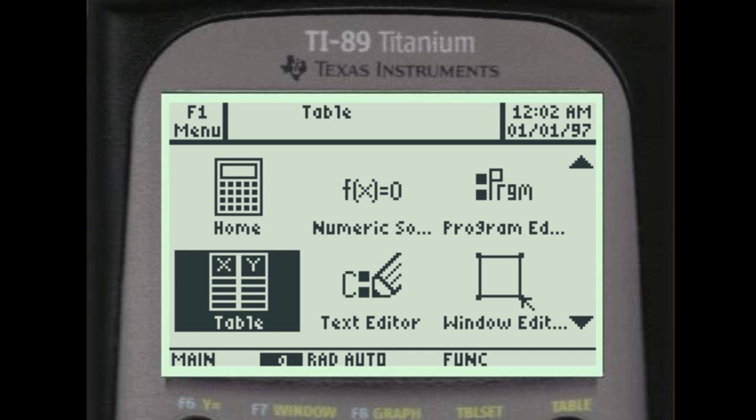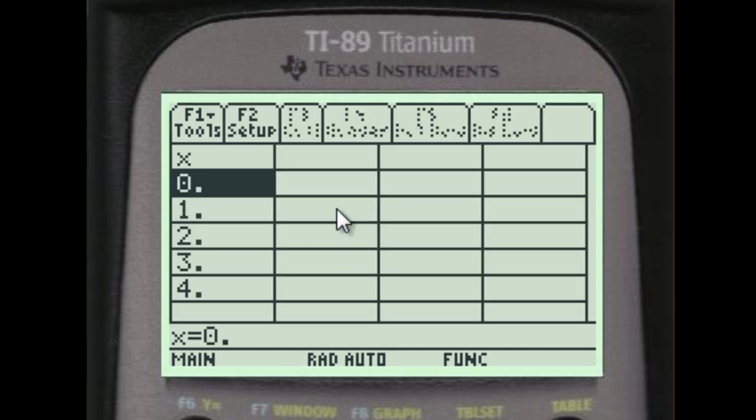Here's the table, which is something you'll find yourself using. When you have an equation in the Y equals editor, it will give you values of that equation at these particular values of X or values of X that you input.